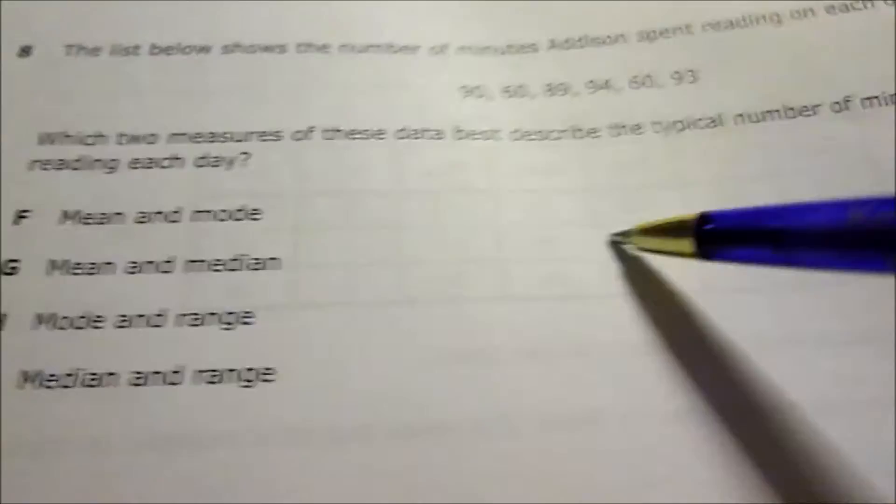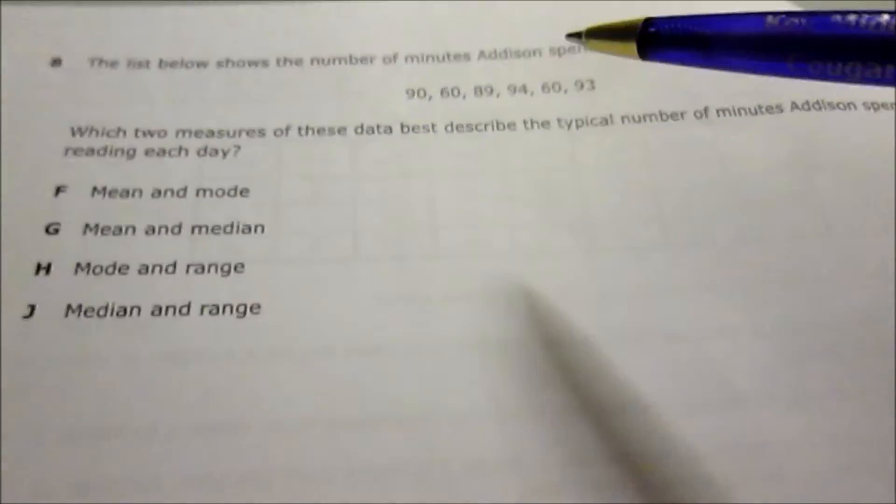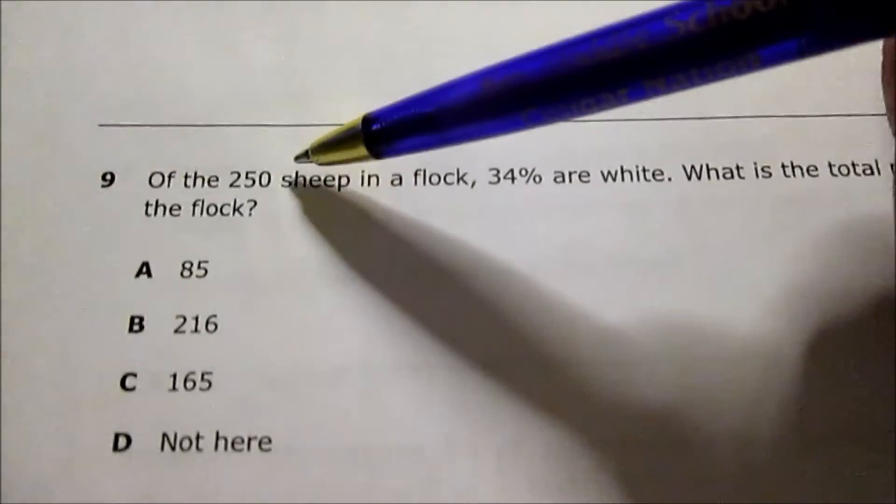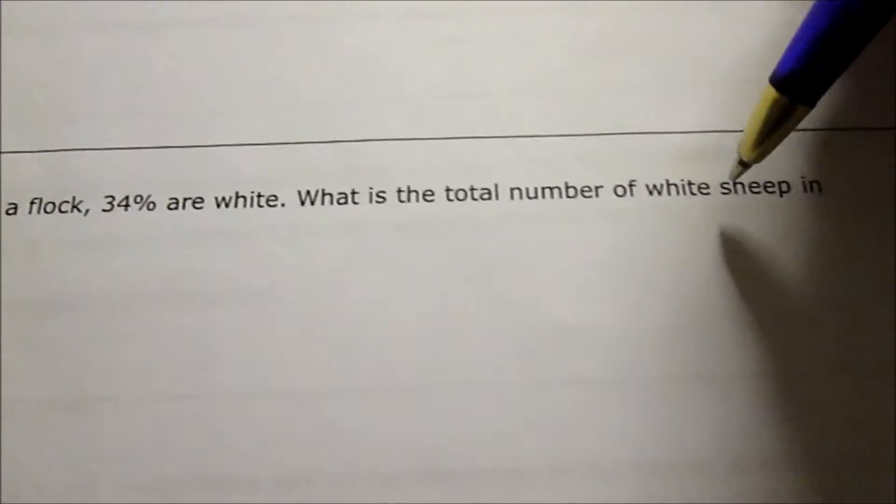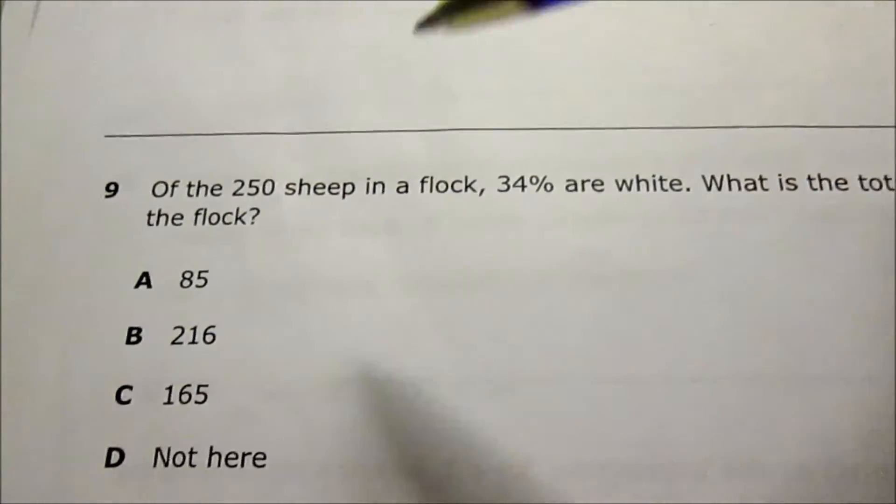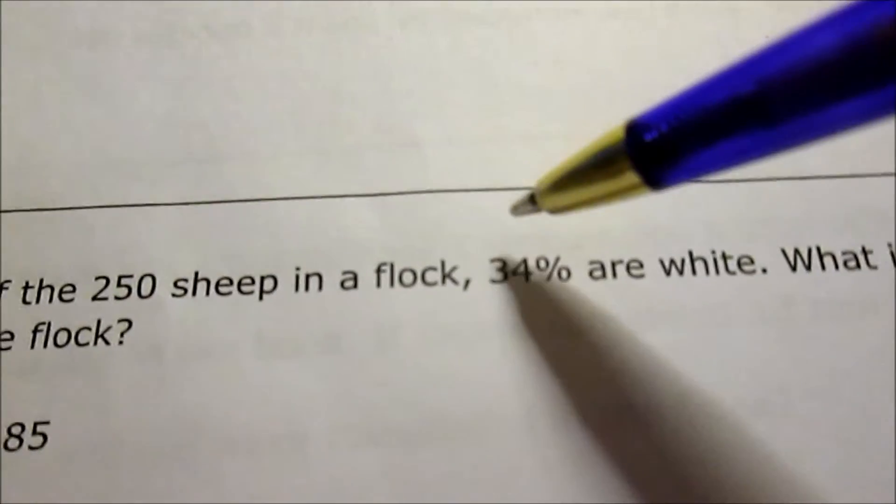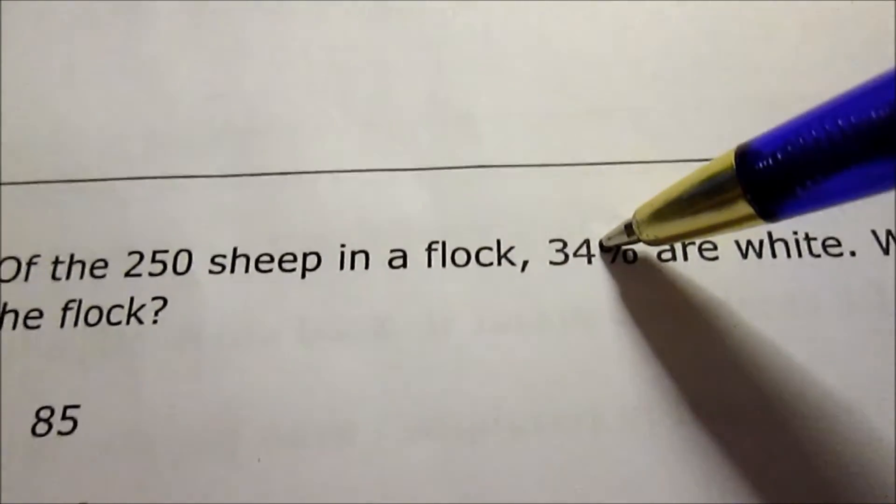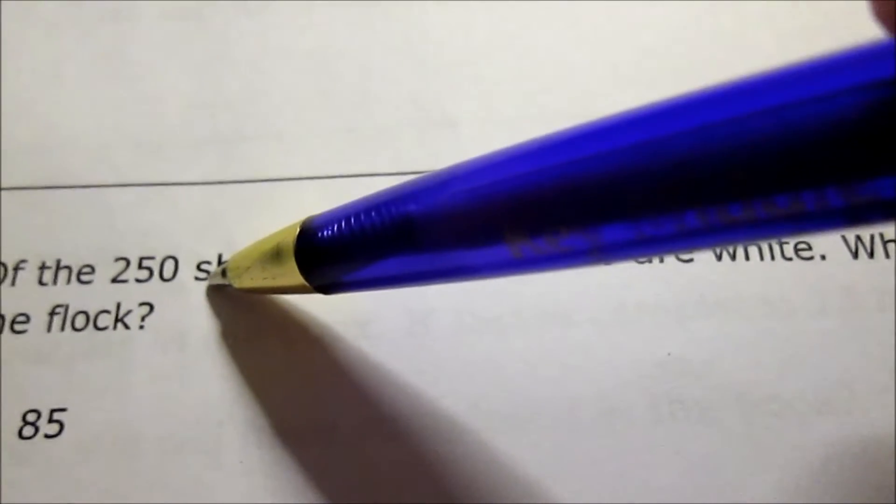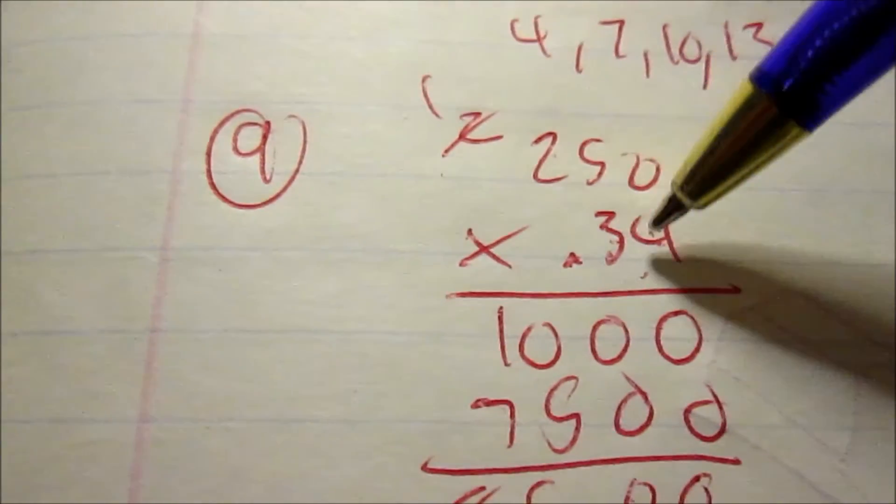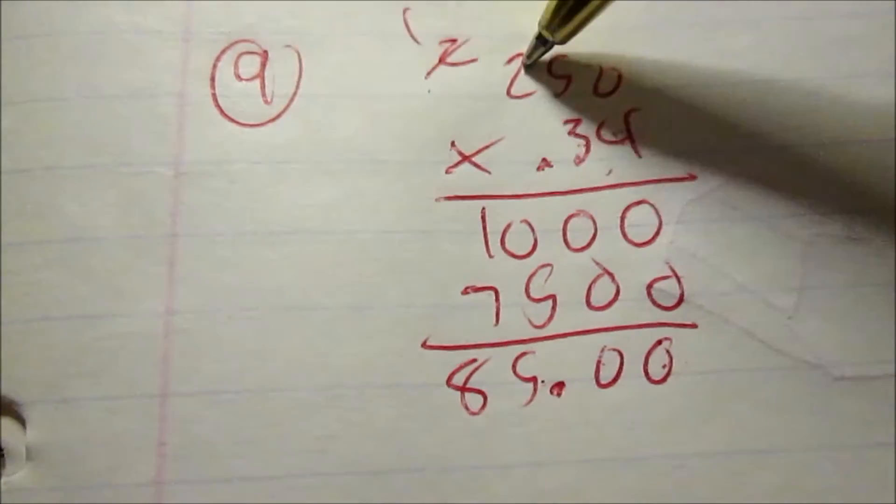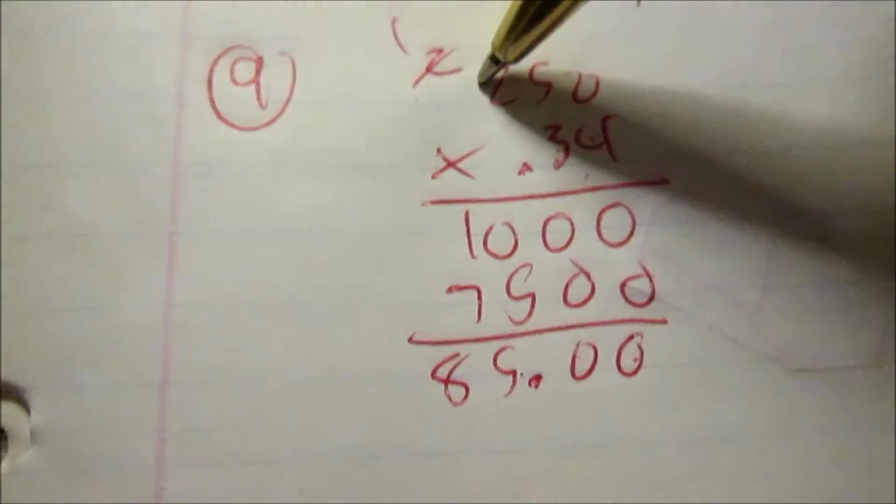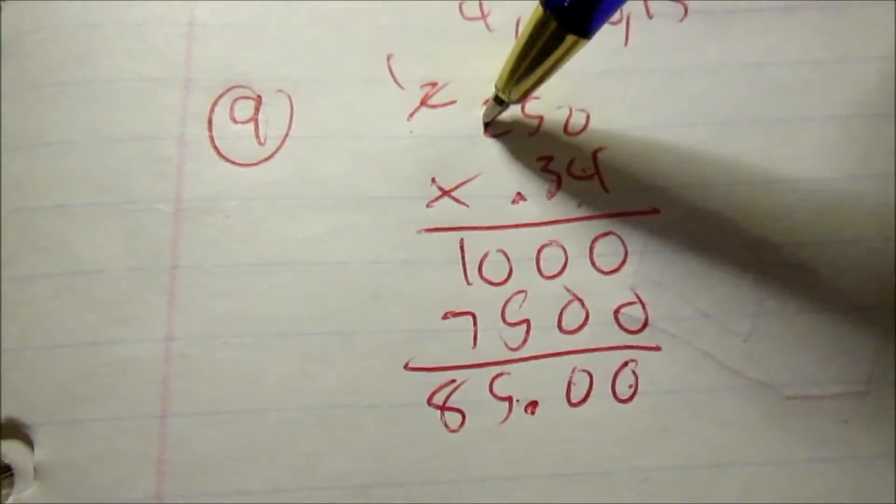Question 9: Of the 250 sheep in a flock, 34% are white. What is the total number of white sheep in the flock? To find percent of a number, you just take the percent, change it to a decimal, multiply by the number. 250 sheep, 34%, change it to a decimal, then multiply. 4 times 0, 4 times 5, carry 2, 4 times 2 plus 2 is 8.